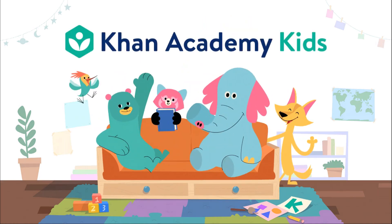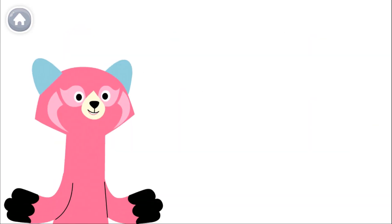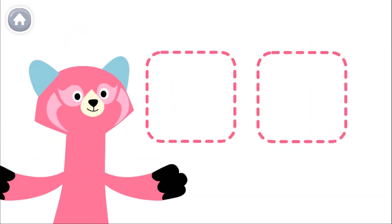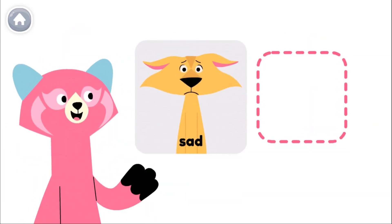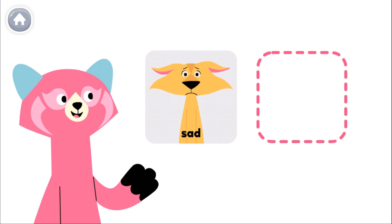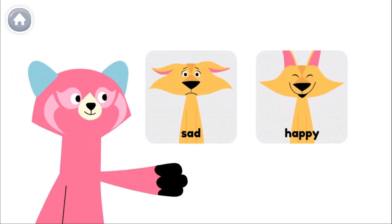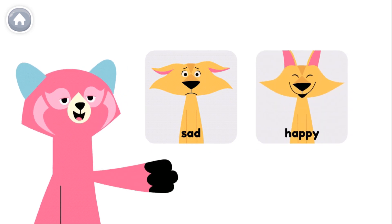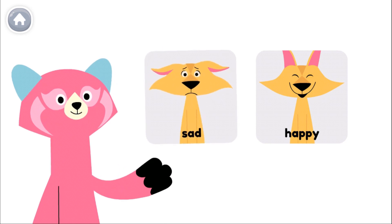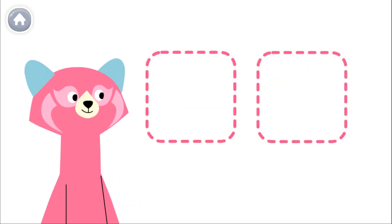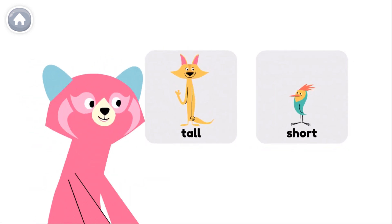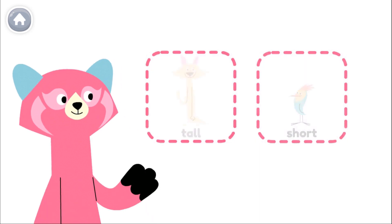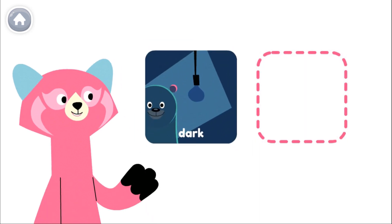Khan Academy Kids, let's learn about opposites! The opposite of sad is happy. If Sandy is happy, she is not sad. The opposite of tall is short, and the opposite of dark is light.